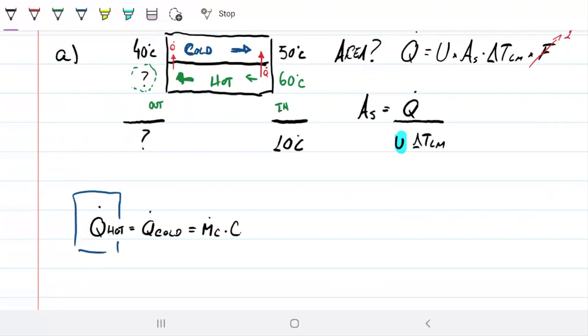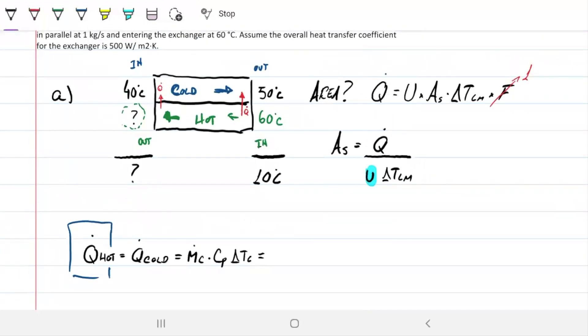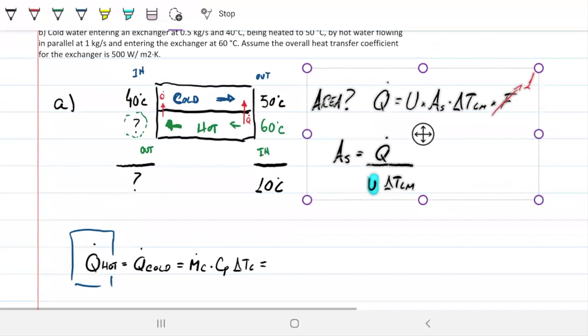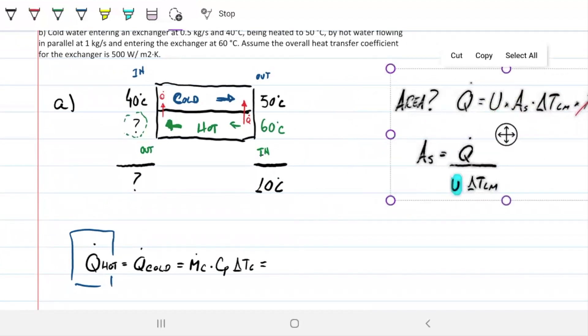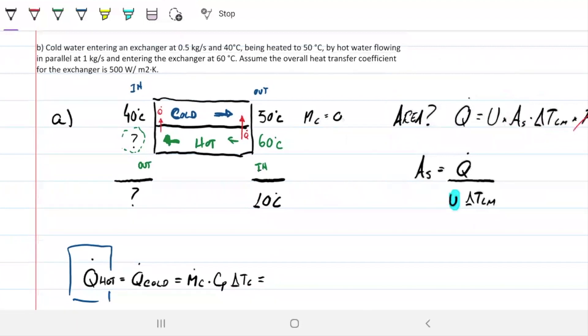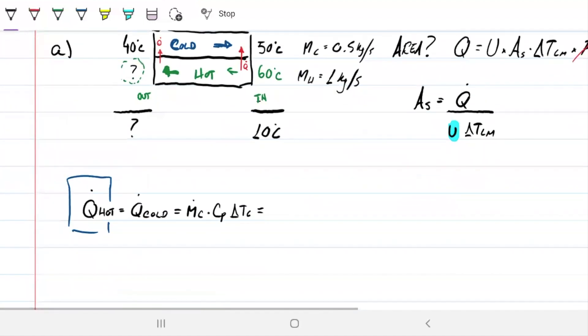Mass flow rate of cold, CP of cold, delta T of cold. What are the mass flow rates? Mass flow rate of the cold is 0.5 kg/s. The mass flow rate of the hot is 1 kg/s. Note how I'm putting them on the same line that I've put the rectangle - it's also part of the method. So that means it's 0.5 times 4200 times the difference from 50 to 40, which is 10.